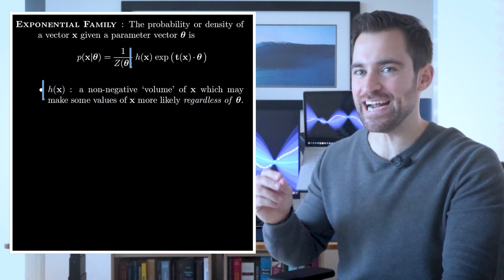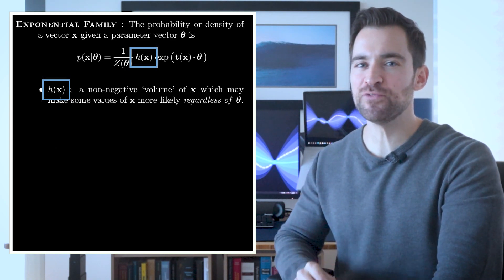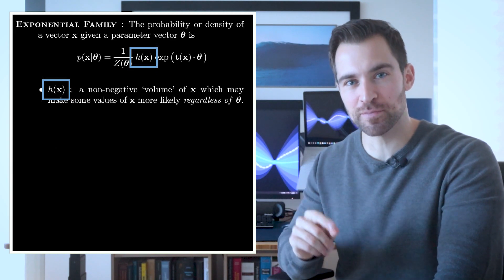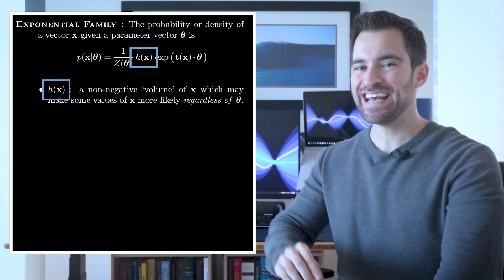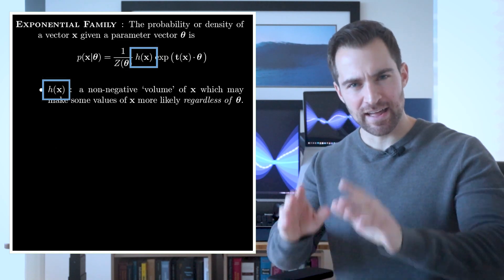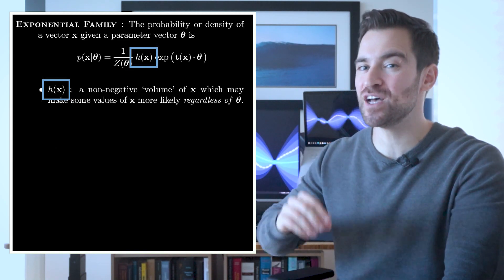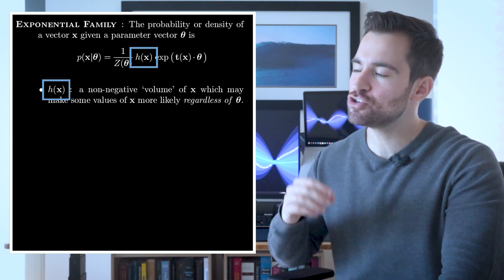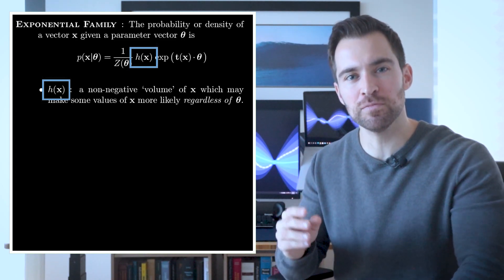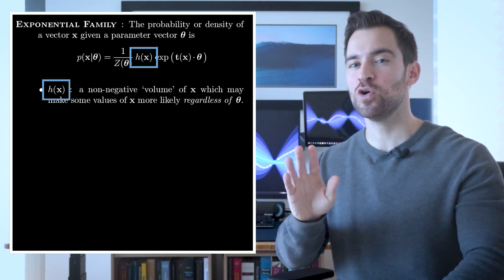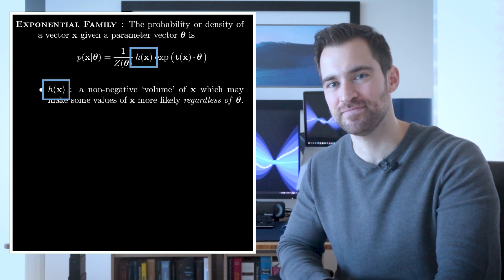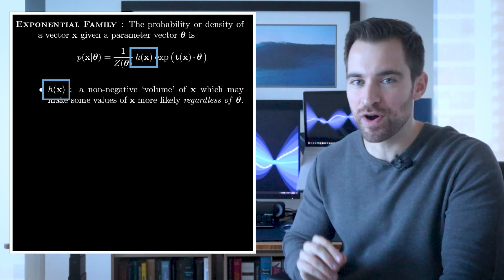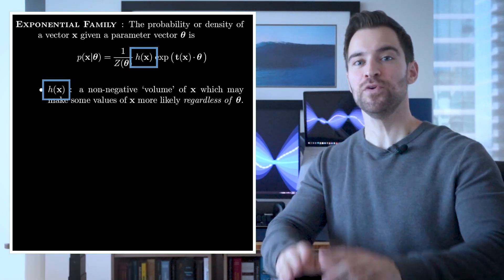First, let's talk about h of x. This is a function which maps from our x vector to a non-negative number, and it provides one factor in our probability. The important thing to notice here is it does not depend on the parameters. Therefore, it has the ability to make some x's more likely than others, regardless of the parameters. Intuitively, you should think of this as the intrinsic, probabilistic volume of x. If that sounds abstract, don't worry. Later we'll see an example to make this idea concrete. And one more thing. A frequent choice of h of x is to map all values of x to 1. So often, it has no effect.